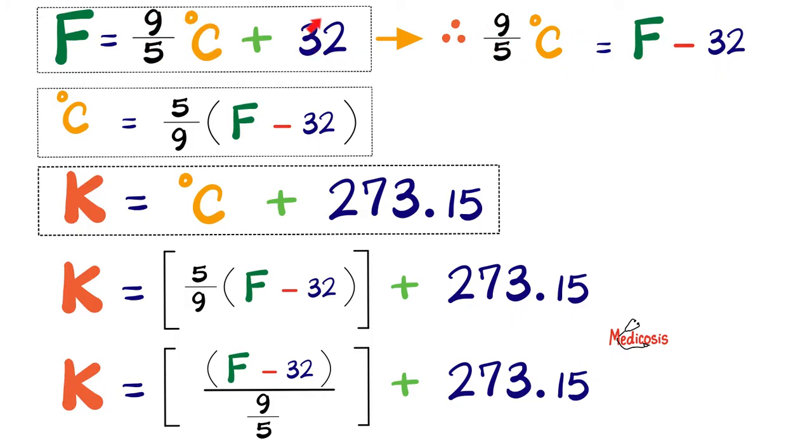Keep this on one side, bring the 32 to the other side with a negative sign, which looks like this, and then multiplying each side of the equation by 5 over 9 to get rid of the 9 over 5, you get something like this. So that's the temperature in Celsius. Keep that in mind.